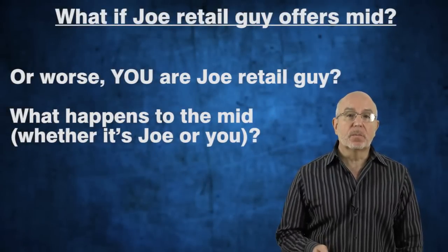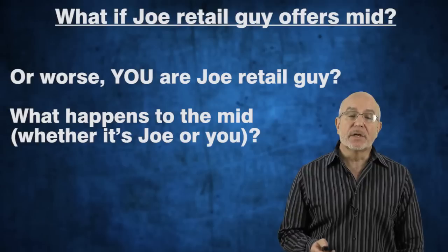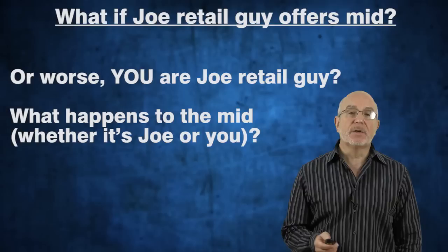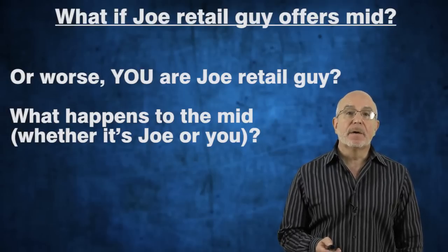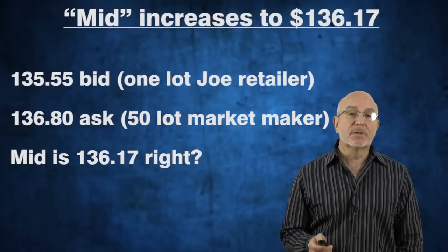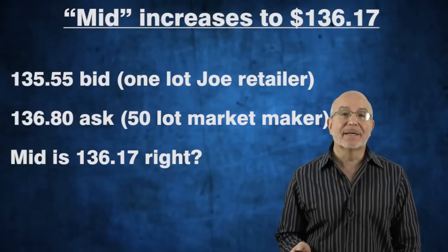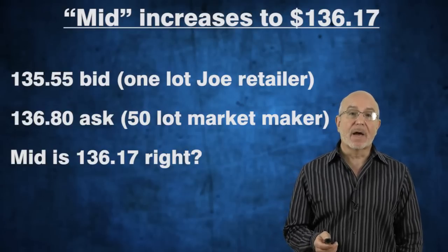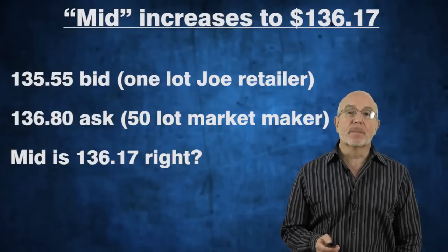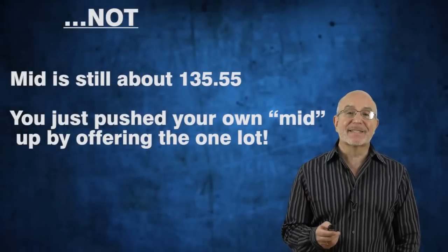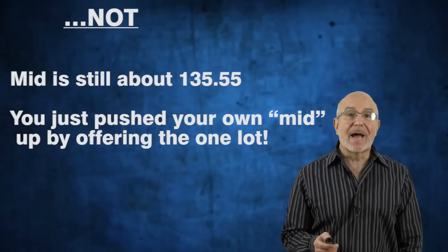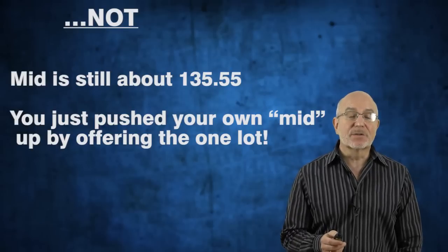Now suppose you want to make an offer to buy that call — let's call you Joe Retail. What happens when Joe Retail puts a bid in for that option? By putting an order in at the mid, which is 135.55, your online broker will immediately flash that the mid has changed to the mathematical average of your bid versus the market maker's ask. That drives the mid up to a higher number, and that higher number is not the real mid. The real mid is where you originally placed your price. If the market has more or less settled, you are around the true mid.